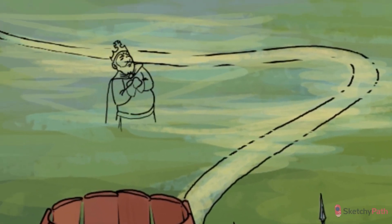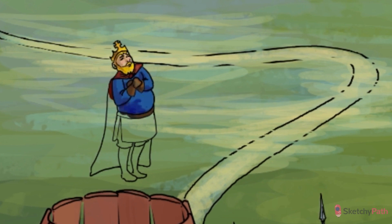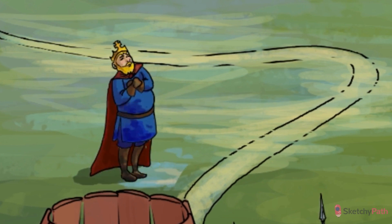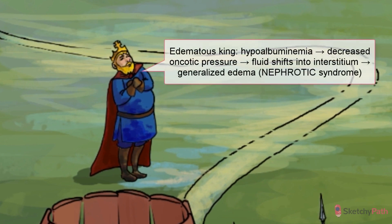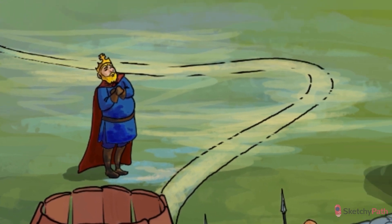Low serum levels of albumin lead to decreased plasma oncotic pressure. As a result, intravascular fluid shifts into the interstitium, manifesting as generalized edema. Just look at King Edward here, looking a little peeved — the battle isn't really going his way. That puddle he's standing in is causing some serious edema. Looking a little soggy around the midsection there, Ed.